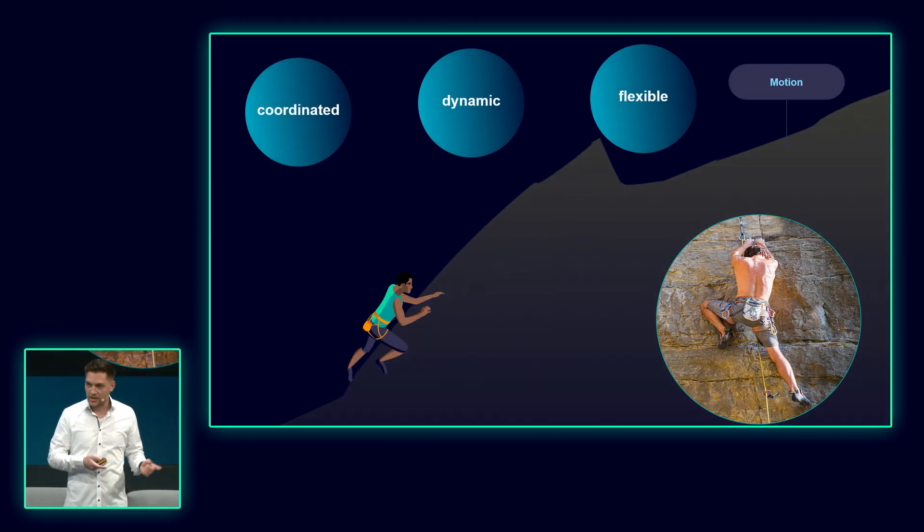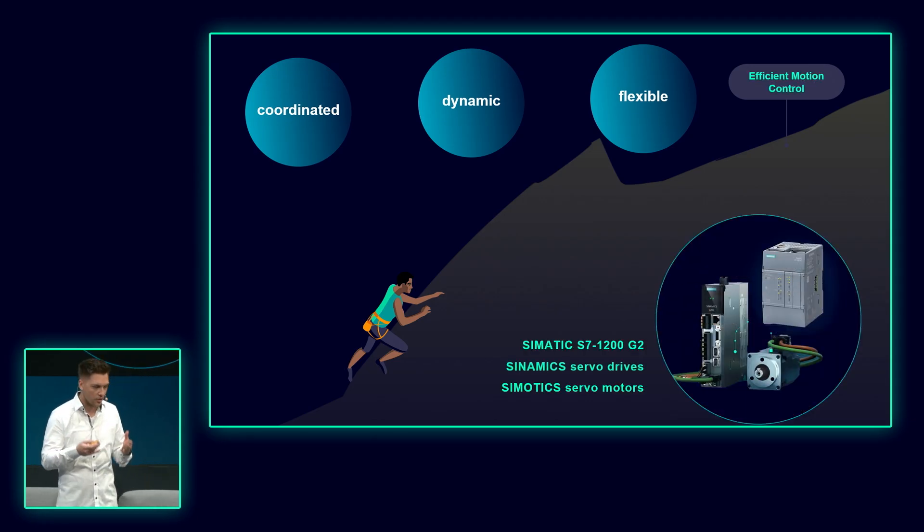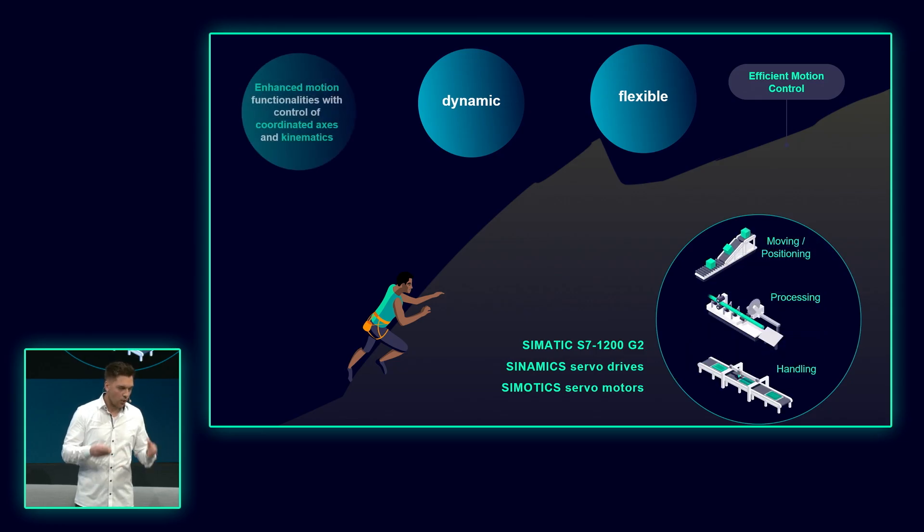Let's go on with our hike and come to the topic of motion. Let's imagine we come to a steep section, and to overcome this hurdle, we need the right movement. The right movement means it should be coordinated, dynamic, and flexible. The same applies to your motion control system in your machine. We offer now the perfect handshake between the controller with SIMATIC S7-1200 G2 and the drive system with our Sinamics Servo Drives and SIMATIC Servo Motors. This allows for coordinated movements. The new controller generation offers enhanced motion capabilities to not only control single axis movements, but now also coordinated axis movements and even simple kinematics. With that you can realize moving and positioning applications, handling applications, or any kind of processing applications.